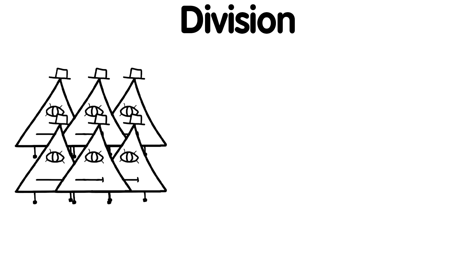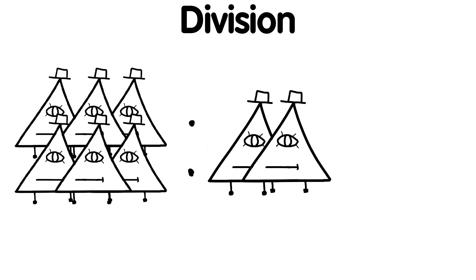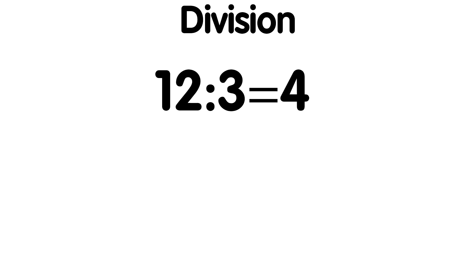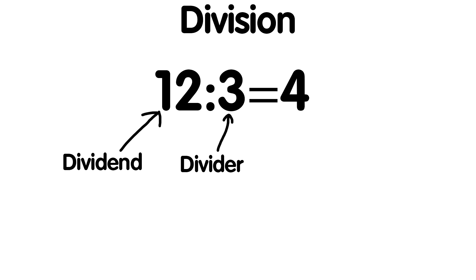Division is an operation that is the inverse of multiplication. A number called the dividend is divided by another number called the divisor, and the result is the quotient. In the division 12 divided by 3, the number 12 is the dividend, 3 is the divisor, and 12 divided by 3 equals 4, so the number 4 is the quotient.